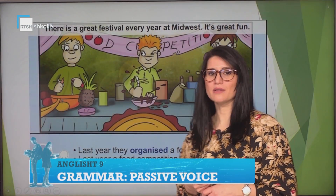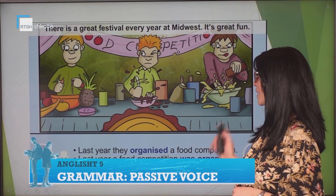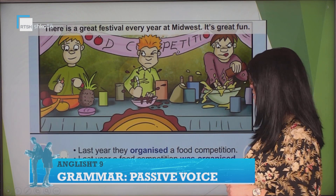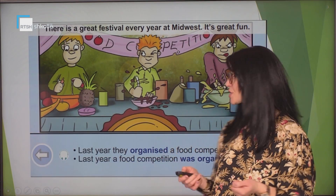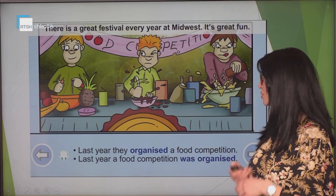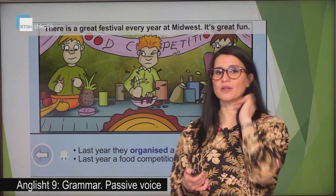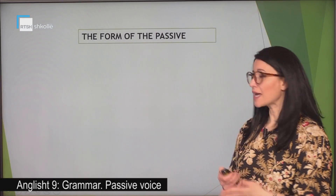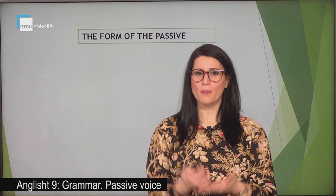Have a look at the other picture. There is a great festival every year. What are they doing? Last year, they organized a food competition. So we can see here a food competition. Last year, a food competition was organized. We have got here another sentence with the same meaning but expressed differently. This is exactly what we are going to learn today — we are going to learn about passive.